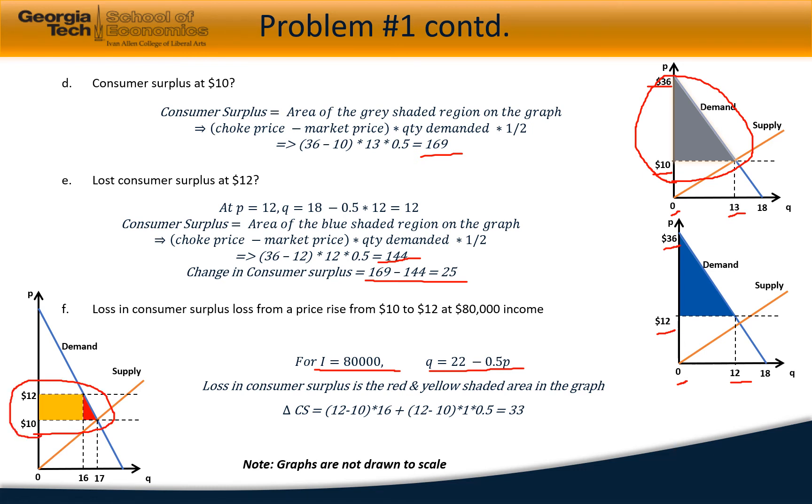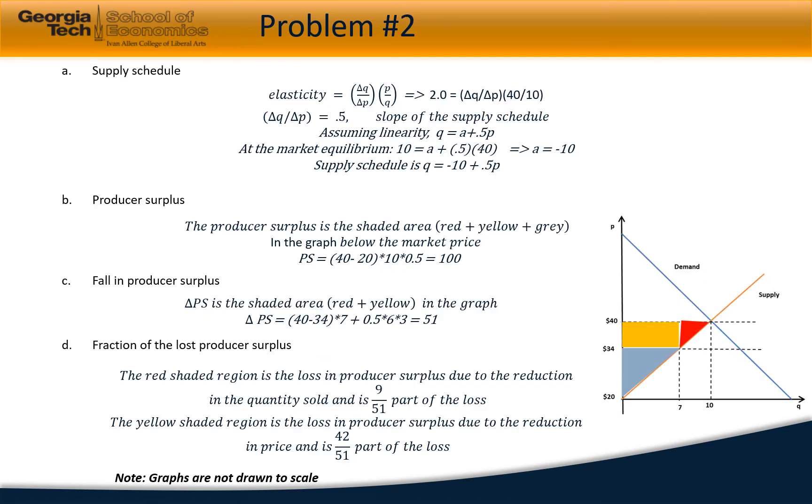In the next problem, we need to understand the supply schedule. We know elasticity can be written as delta q by delta p times p by q. Using that, we can identify delta q by delta p equals 0.5, which is the slope of the supply schedule. Assuming linearity, we can think of the equation as q equals a plus 0.5p. At market equilibrium, we can identify a to be minus 10, so the supply schedule becomes q equals minus 10 plus 0.5p.